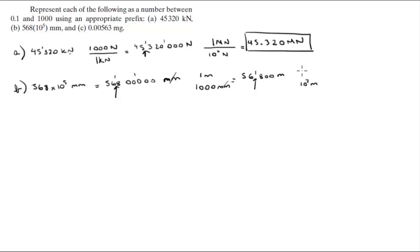To put it right here, you know that there is 10 to the 3 meters in one kilometer, which will put it at 56.8 kilometers. And the last one, part c: 0.00563 milligrams.